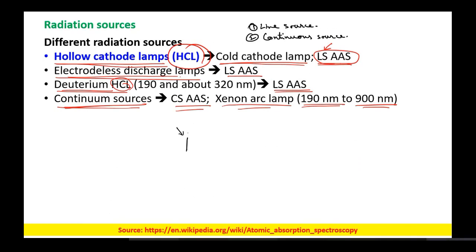You will be able to get information only from that specific metal component you want to analyze. For example, if generating the line source using sodium, you can only use it for analysis of sodium ions, rejecting signal components from potassium and other elements so they do not interfere with your analysis.